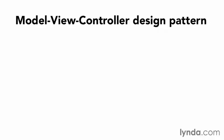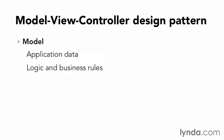In the previous chapter, I discussed how CodeIgniter loosely implements the model-view-controller pattern, then demonstrated both a view and a controller. The final component, the model, traditionally contains application data, logic and business rules, and functions.